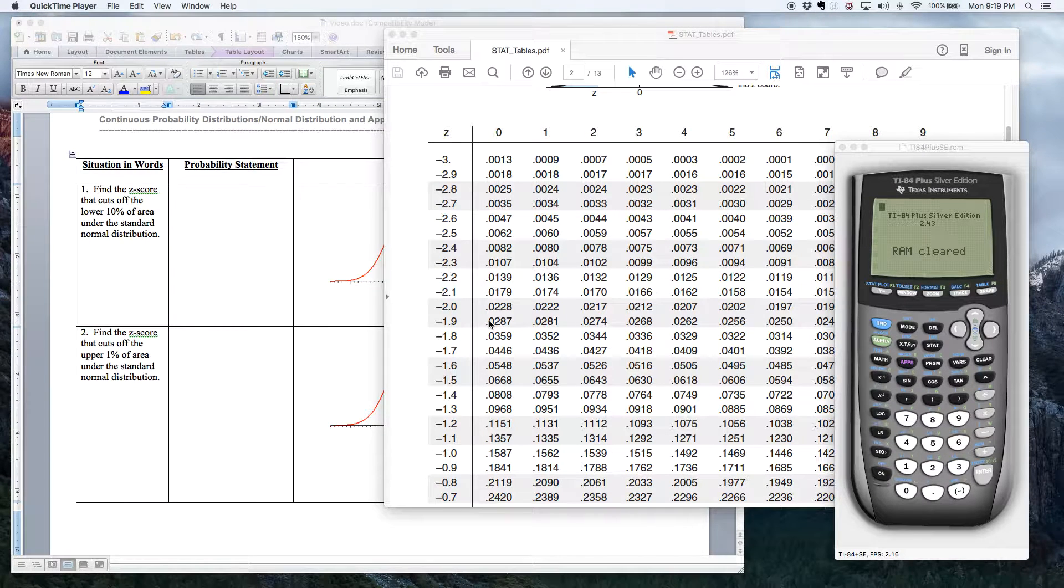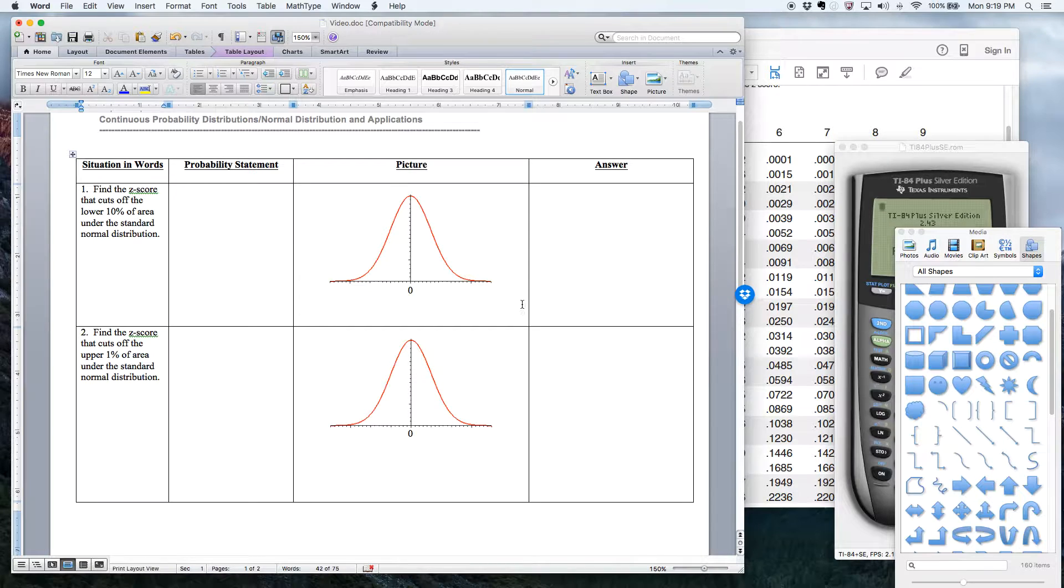Okay, so what I'd like to do in this video is show you how you can use Table 2 and your TI-84 calculator to work problems that involve the inverse normal probability distribution. Okay, so let's look at a quick example.